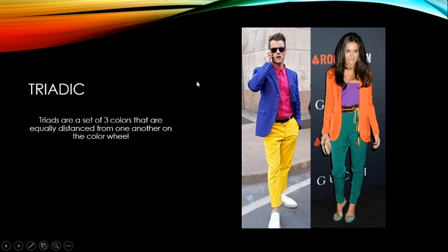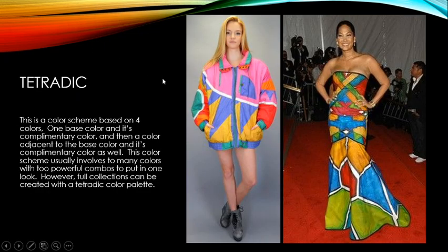Triadic color schemes are a set of three colors equally distanced from one another on the color wheel. The two most basic triads are the primary triad — yellow, blue, and red — and the secondary triad — orange, purple, and green. These are all equally spaced on the color wheel.